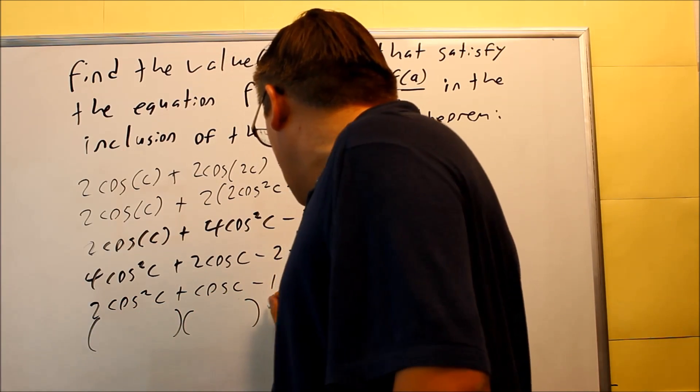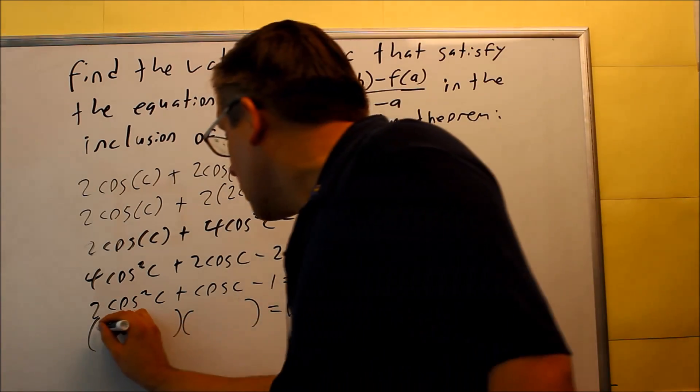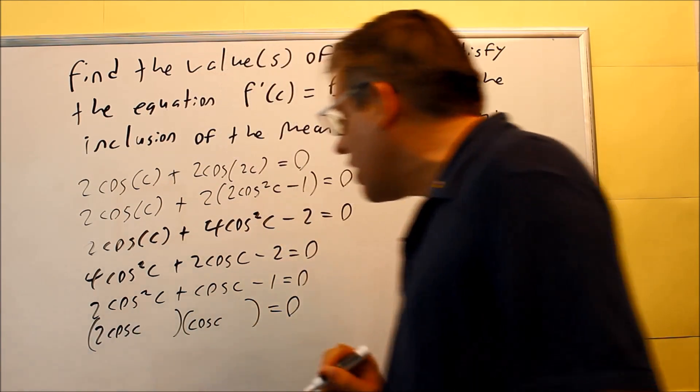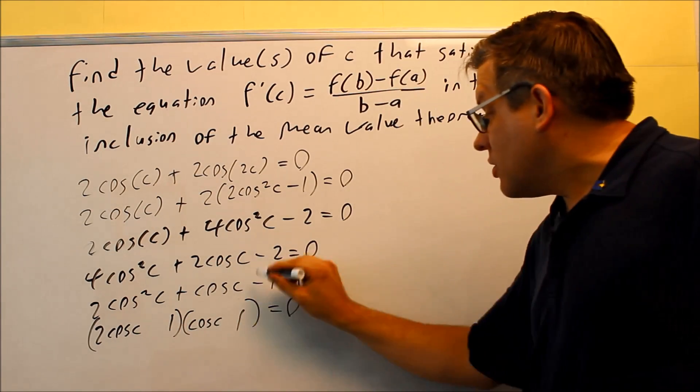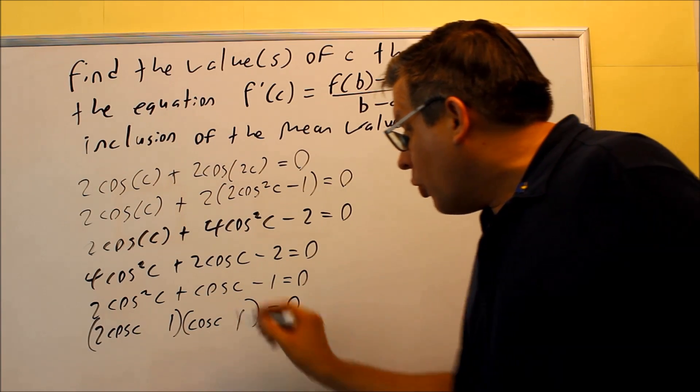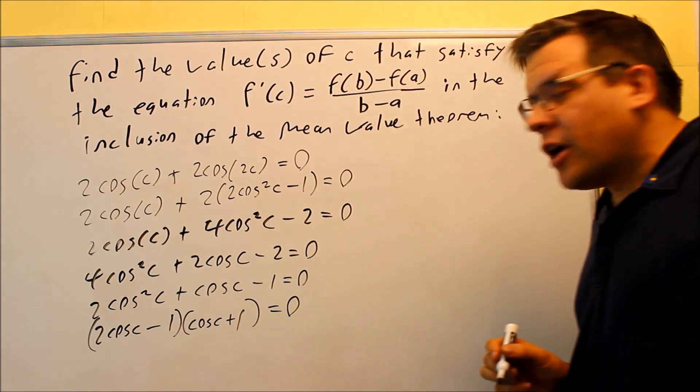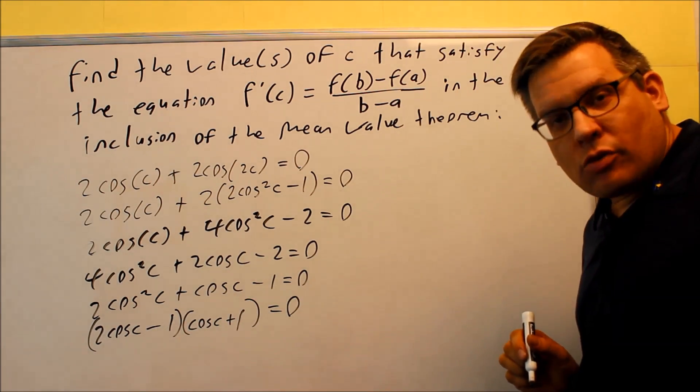Finally, we're down to the point where we can factor this. So we get 2cos(c) and a cos(c) to give us the 2cos²(c). And we have the 1's here on the end to give us the minus 1. One of these will be negative. We want the middle term to be positive, so that means we're going to do a plus and a minus right there. (2cos(c) - 1)(cos(c) + 1) = 0.